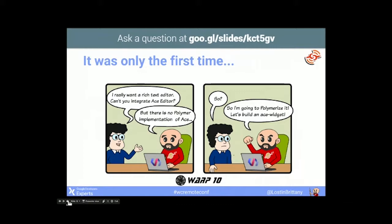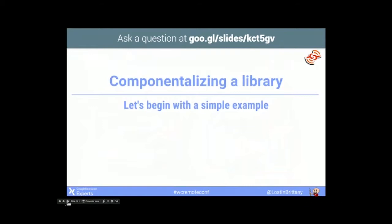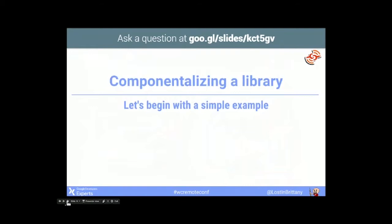It was a really good way to do things after I had understood the right way to do it. So how do you do when you have a library and you need to componentize it? I am going to begin with some examples. A quick disclaimer: I am doing all my examples in Polymer. It doesn't mean it is the only or the right way to wrap a library in a component. It is my way because I really like Polymer.